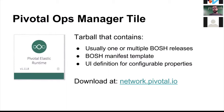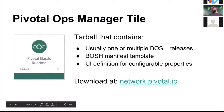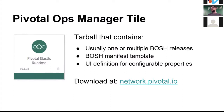The idea is you go to network.pivotal.io, download Ops Manager, and also download tiles there — think of it like the Pivotal Cloud Foundry App Store. You download all that, install it, and you should be good to go.